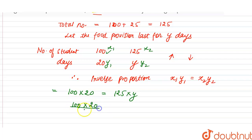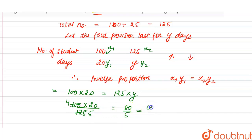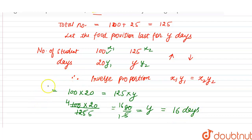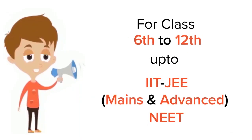Simplifying: 25 × 5 = 125 and 25 × 4 = 100, so this becomes 4 × 20 divided by 5, which is 80 divided by 5, giving y = 16. So the food will last for 16 days when the number of students increases to 125.